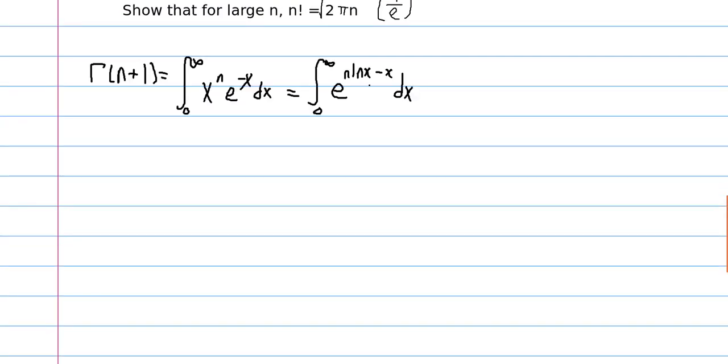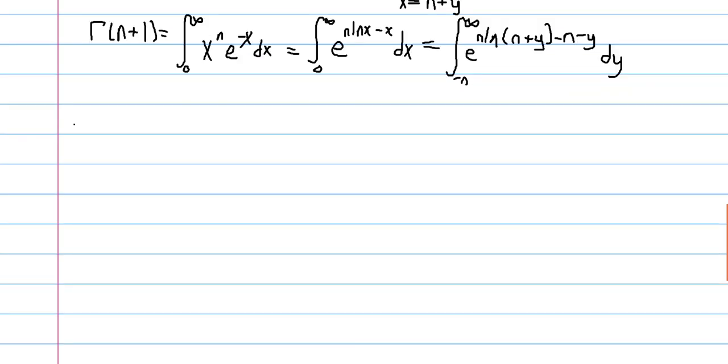So now, we use the substitution that x is equal to n plus y. And we get the following integral. The integral from negative n to infinity, e to the n ln of n plus y minus n minus y. We just plug this in, change the bounds a little bit. And now, by multiplicative properties of the exponential function,